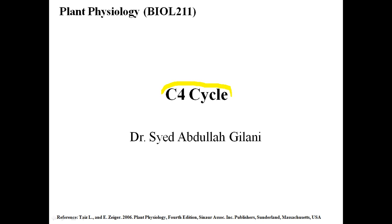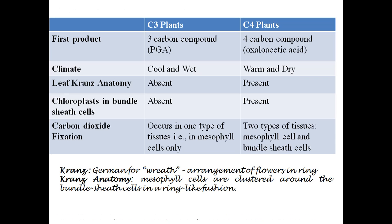Bismillahirrahmanirrahim. I will talk about the C4 cycle. First, we need to know about the differences between C3 plants and C4 plants. In C3 plants, the first product is a three-carbon compound — phosphoglycerate. In C4 plants, where the C4 acid cycle occurs, the first product is a four-carbon compound, which is oxaloacetic acid, also known as oxaloacetate.